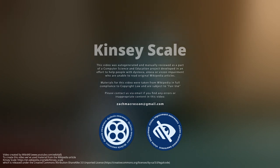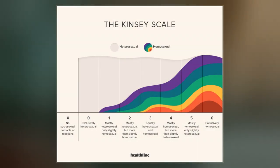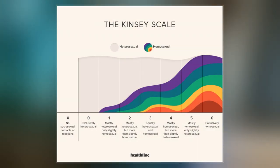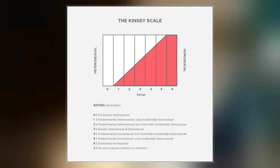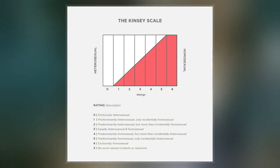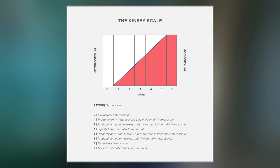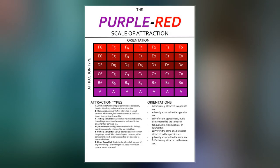The Kinsey Scale, also called the Heterosexual-Homosexual Rating Scale, is used in research to describe a person's sexual orientation based on one's experience or response at a given time. The scale typically ranges from 0, meaning exclusively heterosexual, to a 6, meaning exclusively homosexual.